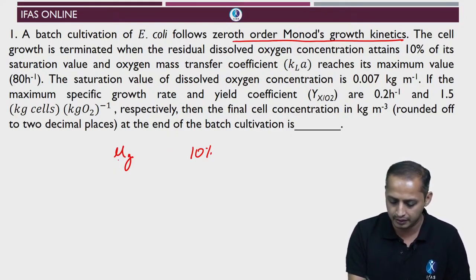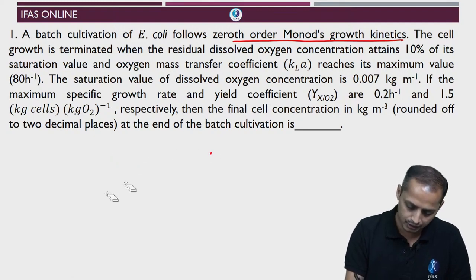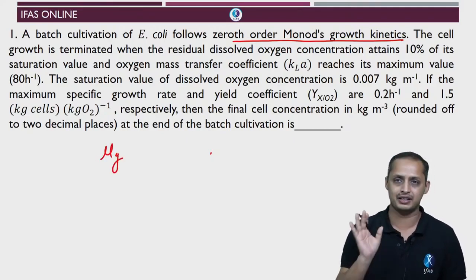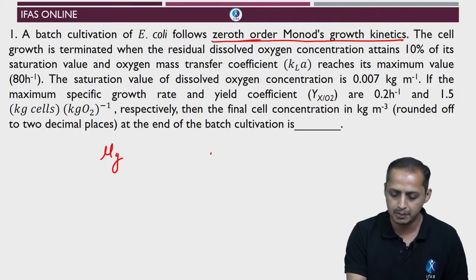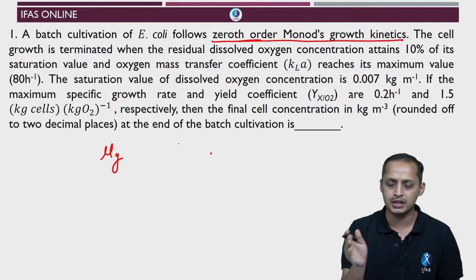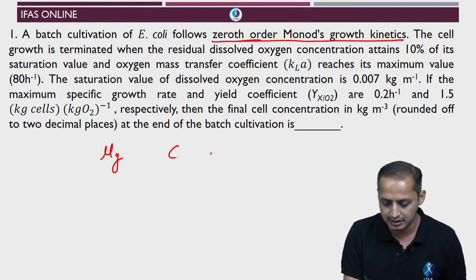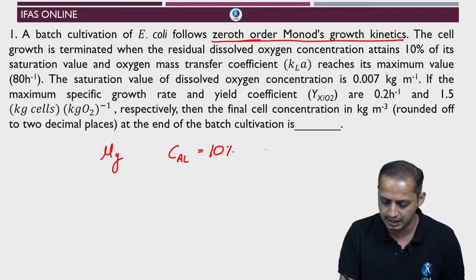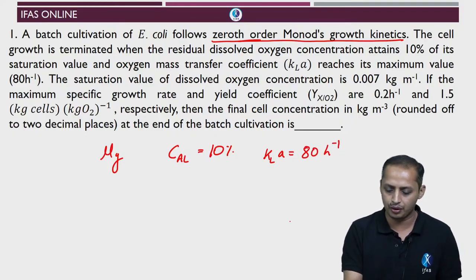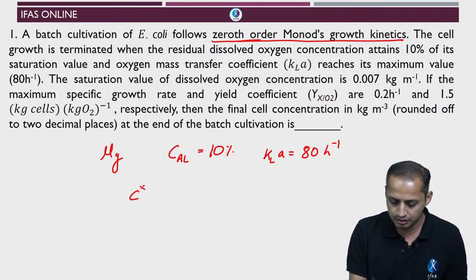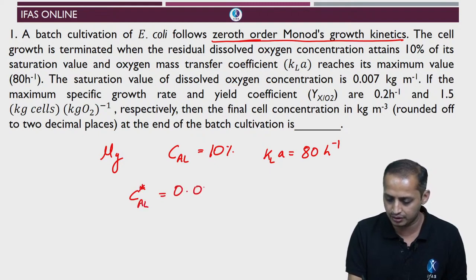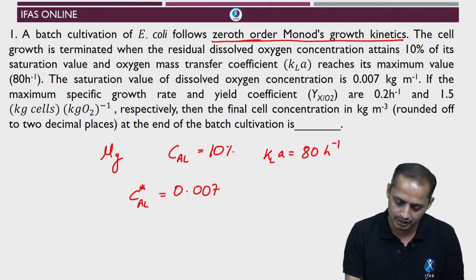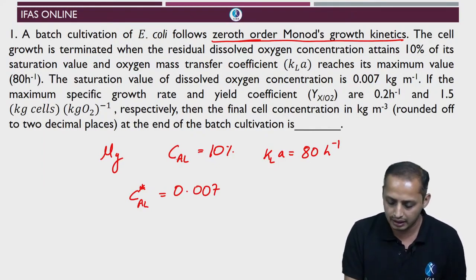What is given to you: first, μ_max has been attained — we know this from the 0th order condition. The lowest concentration at which cell growth is possible — that is C_L — is 10% of the saturation value. The oxygen mass transfer coefficient K_LA is given as 80 per hour. The saturation value of dissolved oxygen C* is 0.007. So C_L will be 10% of C*, which is 0.0007.